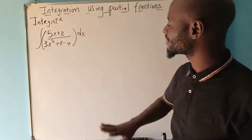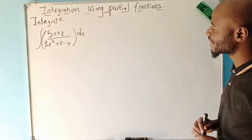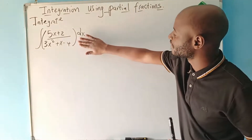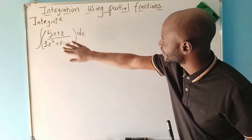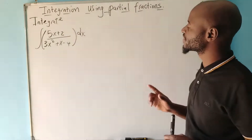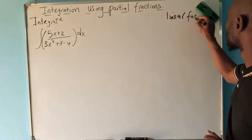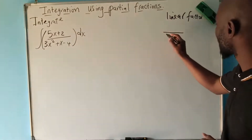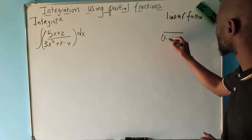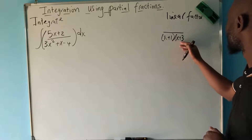There are basically four ways in which you can decompose something into partial fractions. First, you have to observe what you have in the denominator. If what you have in the denominator is a polynomial, you would need to factorize it. After you factorize, you may end up with what you call linear factors. Linear factors will look like, for example, x plus one and x plus three.